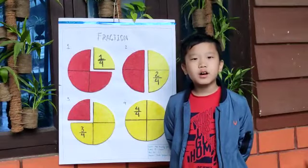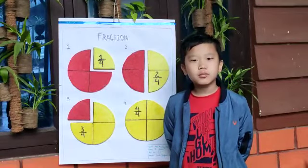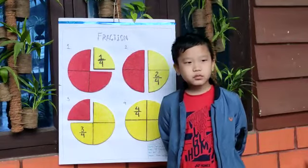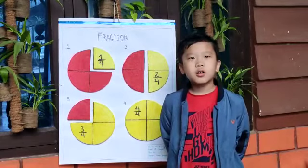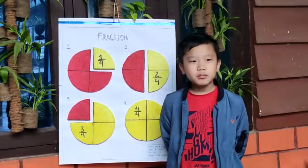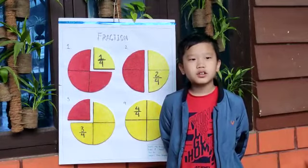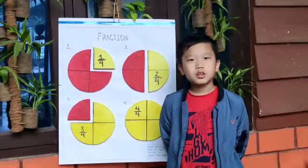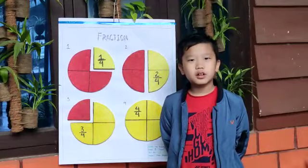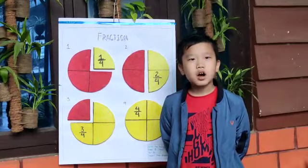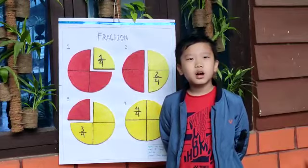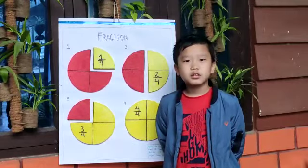In Fraction, the bottom one is called denominator. It shows how many equal parts the object is divided into. The top one is called numerator. It shows how many parts we are looking at.